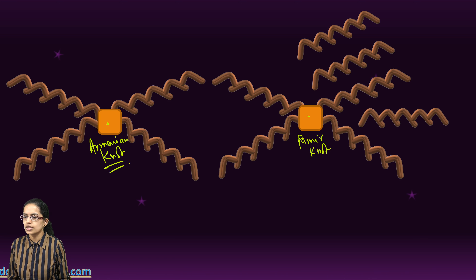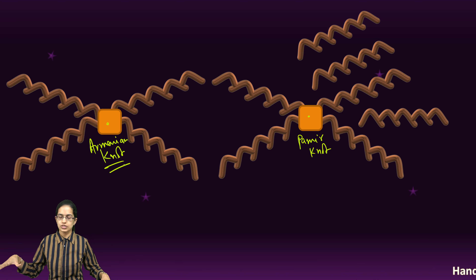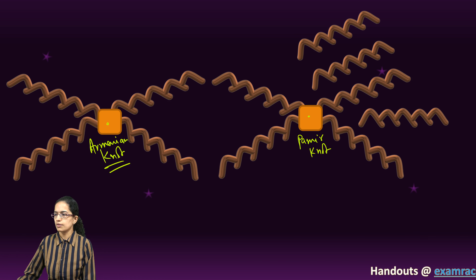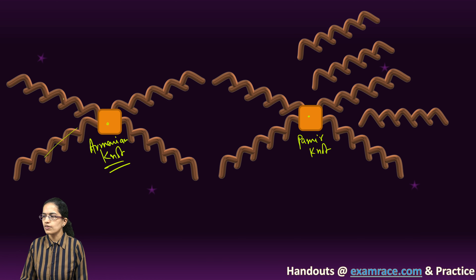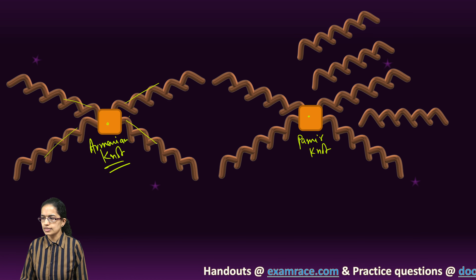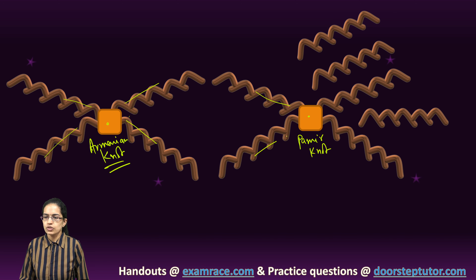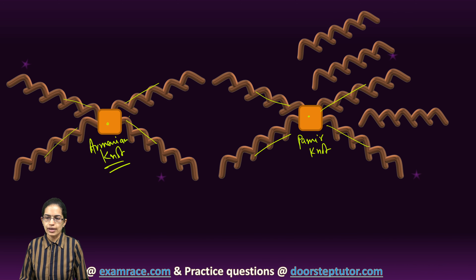Knots are the points where the various mountain ranges originate, and since we have drawn the shape of X, you would have 4 mountain ranges on either side. So let's begin understanding these one by one.